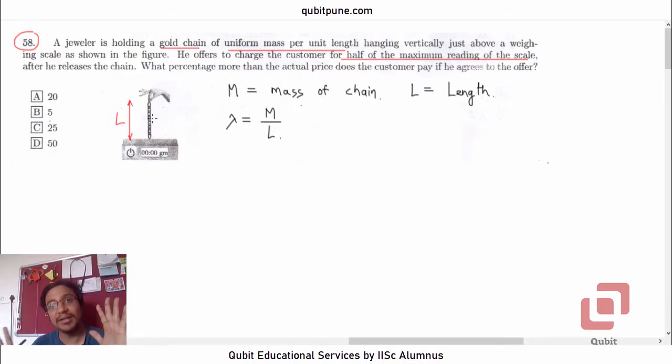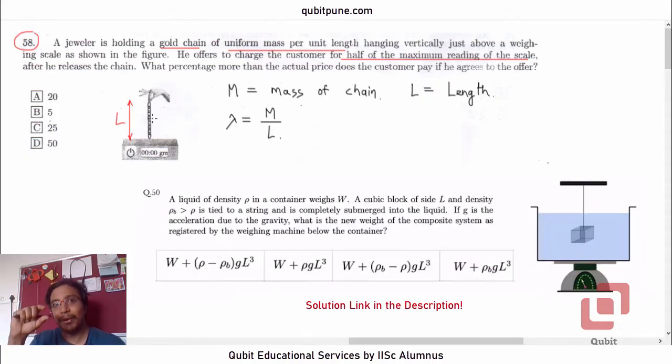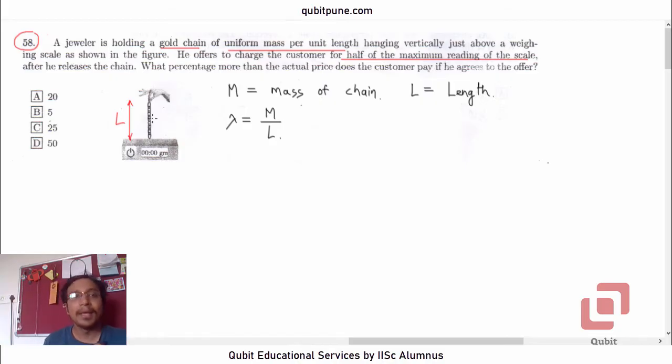When momentum is changing, there is a force acting on the chain offered by the weighing machine that is called the reaction. And that reaction is what we want to calculate. There is a similar sum in 2022 edition of the IISC aptitude test.